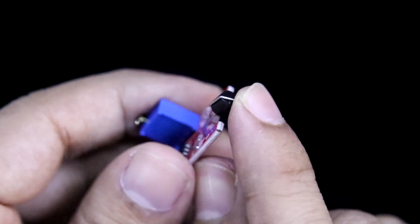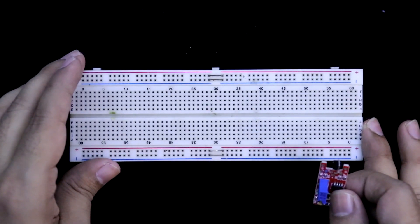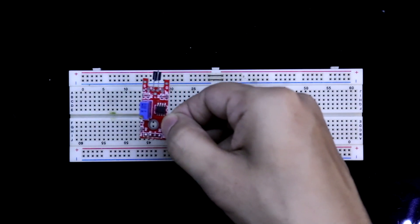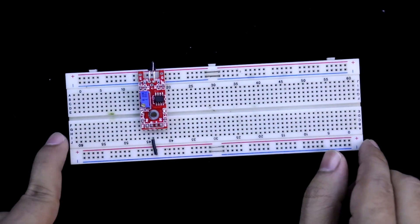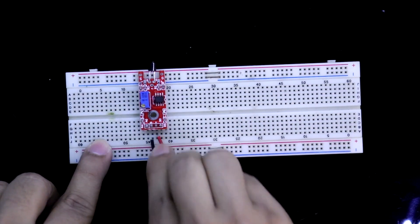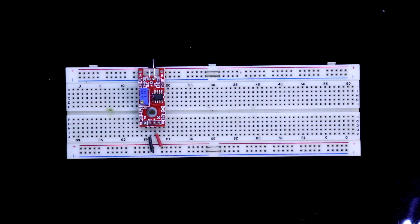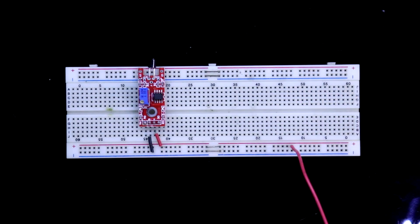And this is the touch point. Now I am putting the sensor on the breadboard. Here it is ground and the positive. Connecting plus 5 volt, here it is positive and the negative.